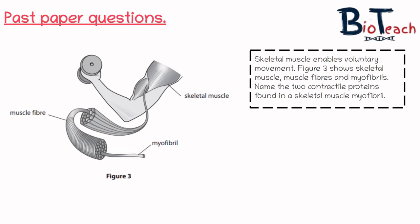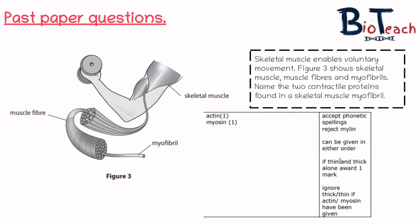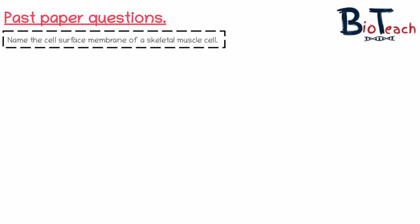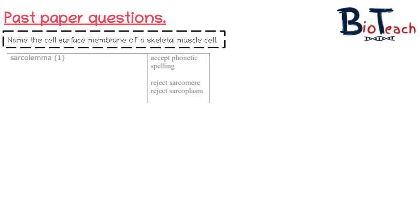Now I've got some past paper questions to talk you through, to help you understand the demands of the questions and the keywords you'd need to mention. The first question says: 'Name the two contractile proteins found in skeletal muscle myofibril.' The answer is actin and myosin. The next part asks: 'Name the cell surface membrane of the skeletal muscle cell.' Many students get confused by this — you should say the sarcolemma. You shouldn't say sarcomere, as that's the muscle cell itself, and you shouldn't say sarcoplasm, as that's equivalent to the cytoplasm.